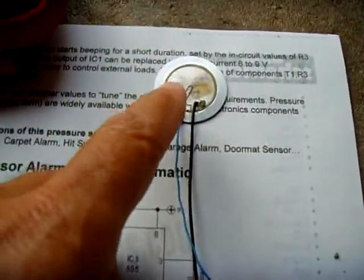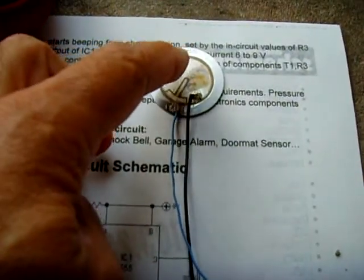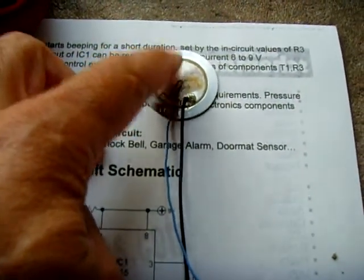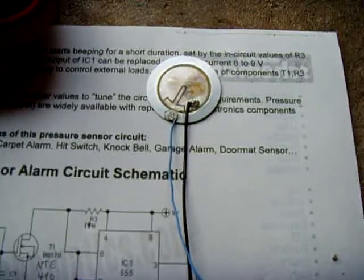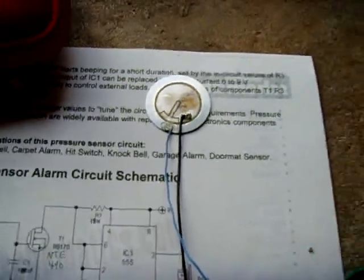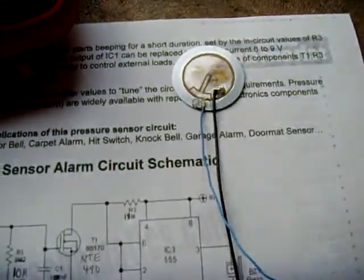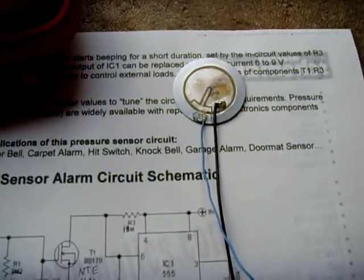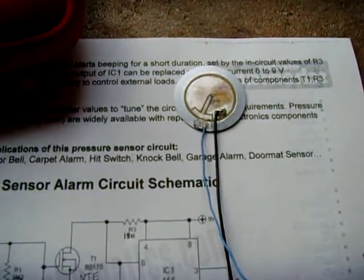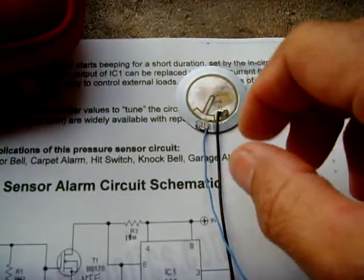This is a pressure sensitive alarm. If you push on this disc like this it'll activate. You can have it under a doormat, so if somebody walks up you could put a whole bunch of these in parallel. If somebody steps on the doormat it's gonna put pressure and it'll trigger the alarm.